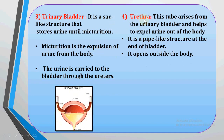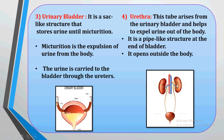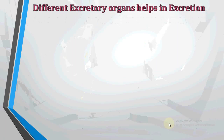The next part is the urethra. It is a pipe-like structure at the end of the bladder that opens outside the body. This tube arises from the urinary bladder and helps to expel or remove urine out of the body. So the main parts of the excretory system are: the pair of kidneys, the ureters, the urinary bladder, and the urethra.